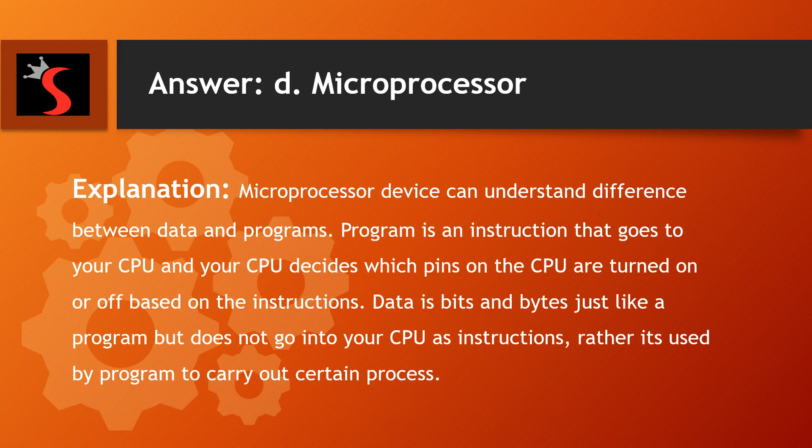The right answer is option D. Microprocessor. Explanation: A microprocessor can understand the difference between data and programs. A program is an instruction that goes to your CPU, and your CPU decides which pins are turned on or off based on the instructions. Data is bits and bytes just like a program but does not go into your CPU as instructions — rather it is used by the program to carry out certain processes.